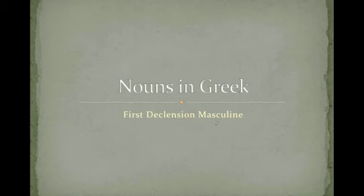And the difference between these two is going to be that one has the eta and one has the alpha, just like type A and type B did of the feminine nouns. The other thing you're going to notice is that these use masculine articles. They have to because they're masculine nouns.